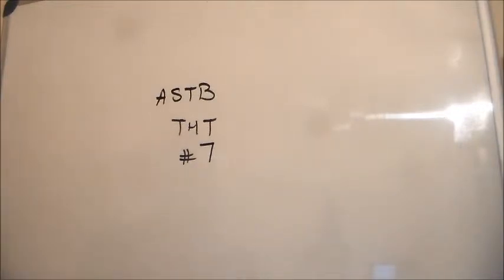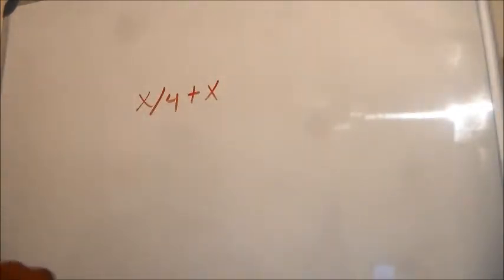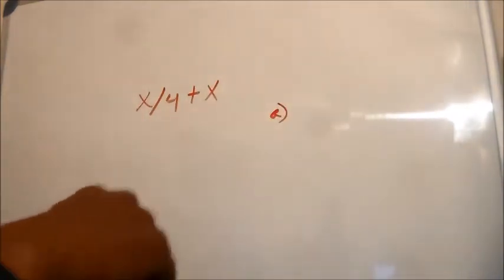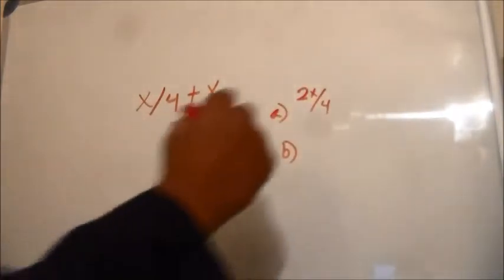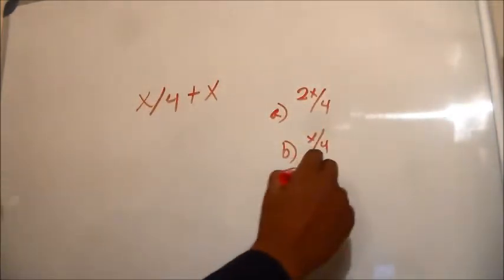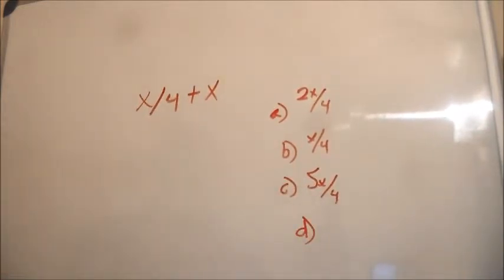Good evening ladies and gentlemen, welcome to the Aviation Selection Test Battery take-home test, question number seven. We have X/4 plus X, and they want to know what that equals. It could possibly be 2X over 4, X over 4, 5X over 4 (selection C), or selection D which is 4X — that's not going to be 4X, but let's just work it out.